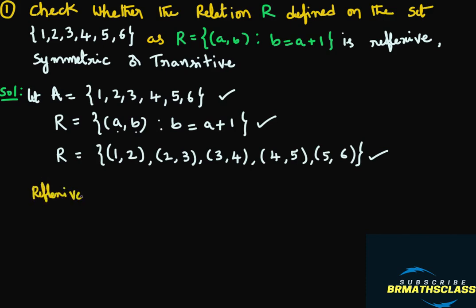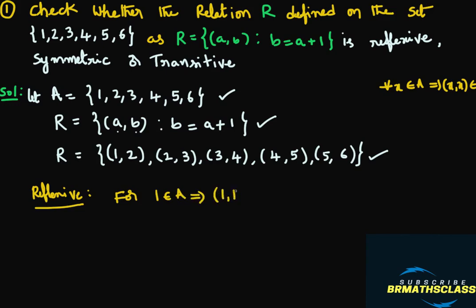Reflexive relation: for every x ∈ A, the ordered pair (x, x) must be in R. Take element 1 in set A — is ordered pair (1, 1) in this relation? It is not there. So, for 1 ∈ A, (1, 1) does not belong to R. Therefore, R is not a reflexive relation.